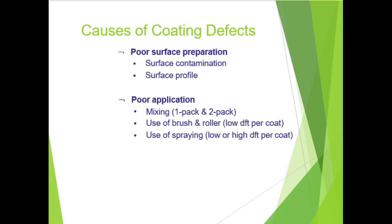The main causes of coating defects are surface contamination and surface profile issues. If the surface is not properly clean, painting defects will appear. The surface profile should also be smooth. Application-related causes include poor mixing of one-pack and two-pack systems — if not mixed as per manufacturer recommendation, coating defects will occur. Using a brush or roller with low DFT, or using spray with low or high DFT not meeting manufacturer or client requirements, are also causes.